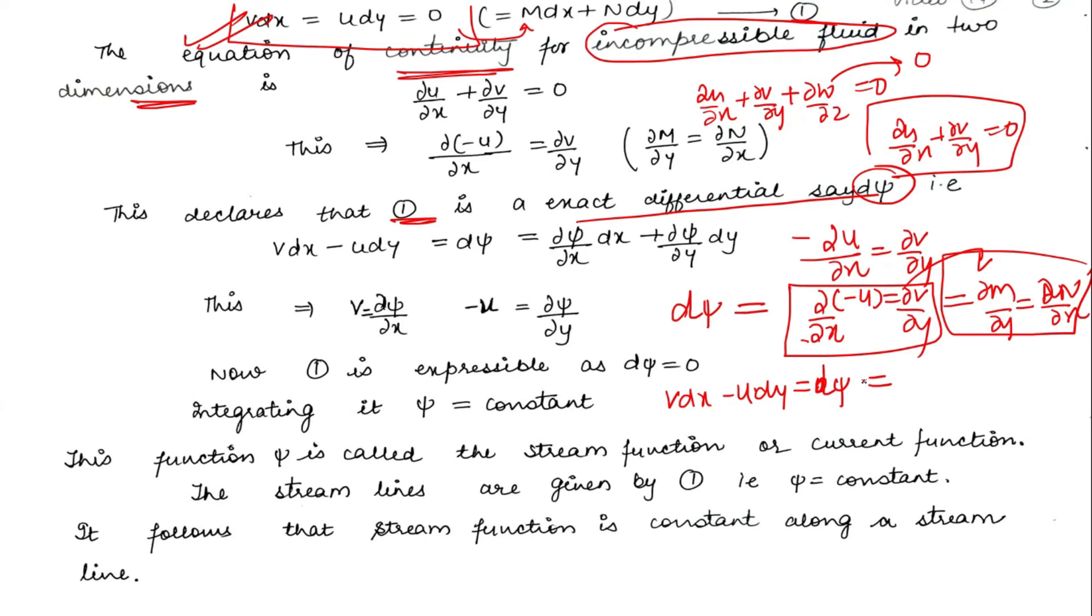If we open it, then we can write del psi by del x dx plus del psi by del y dy. When we equate components, V equals del psi by del x and U equals minus del psi by del y.